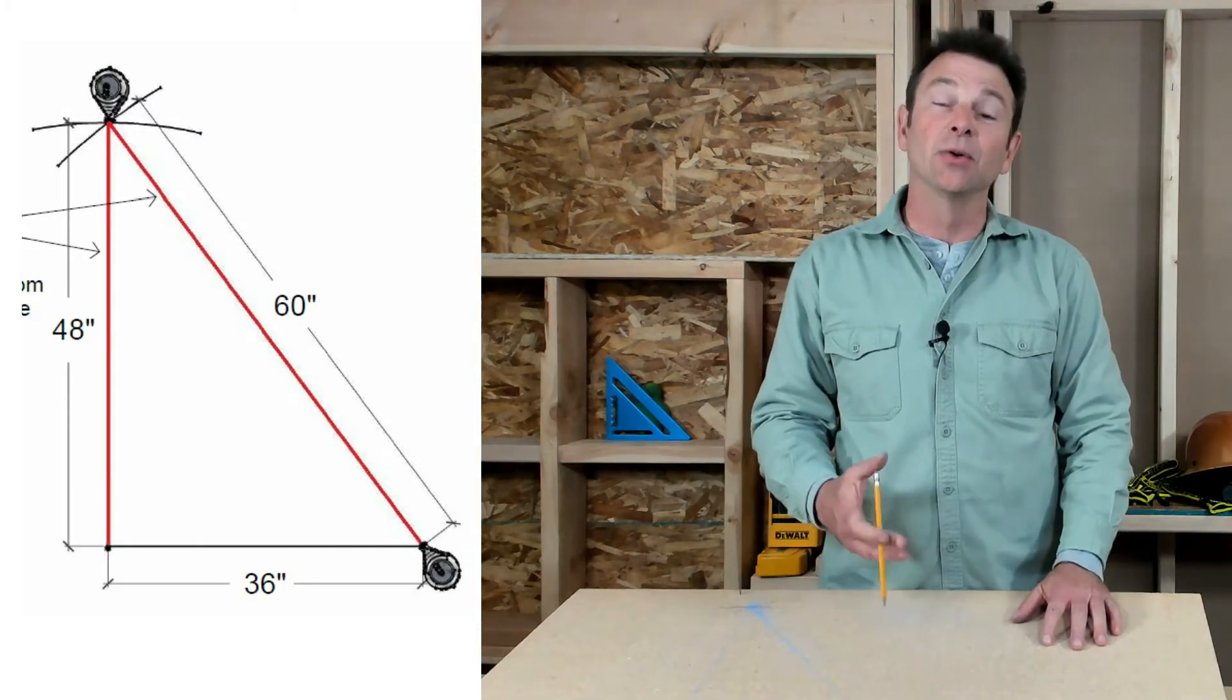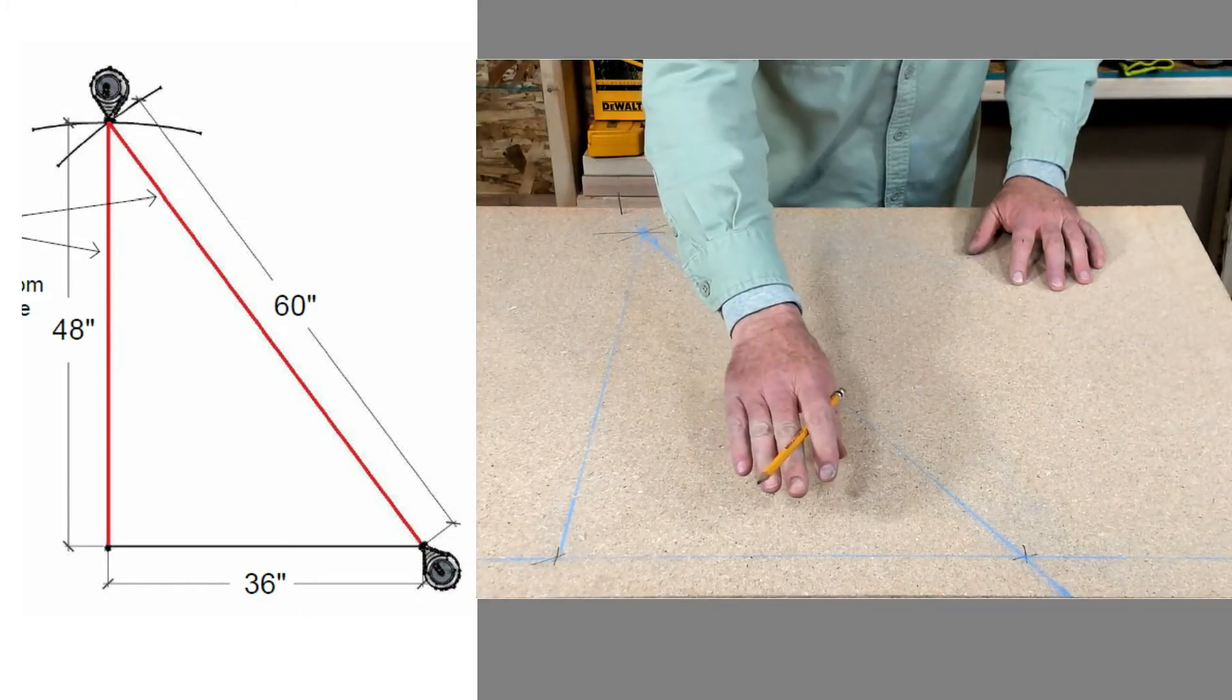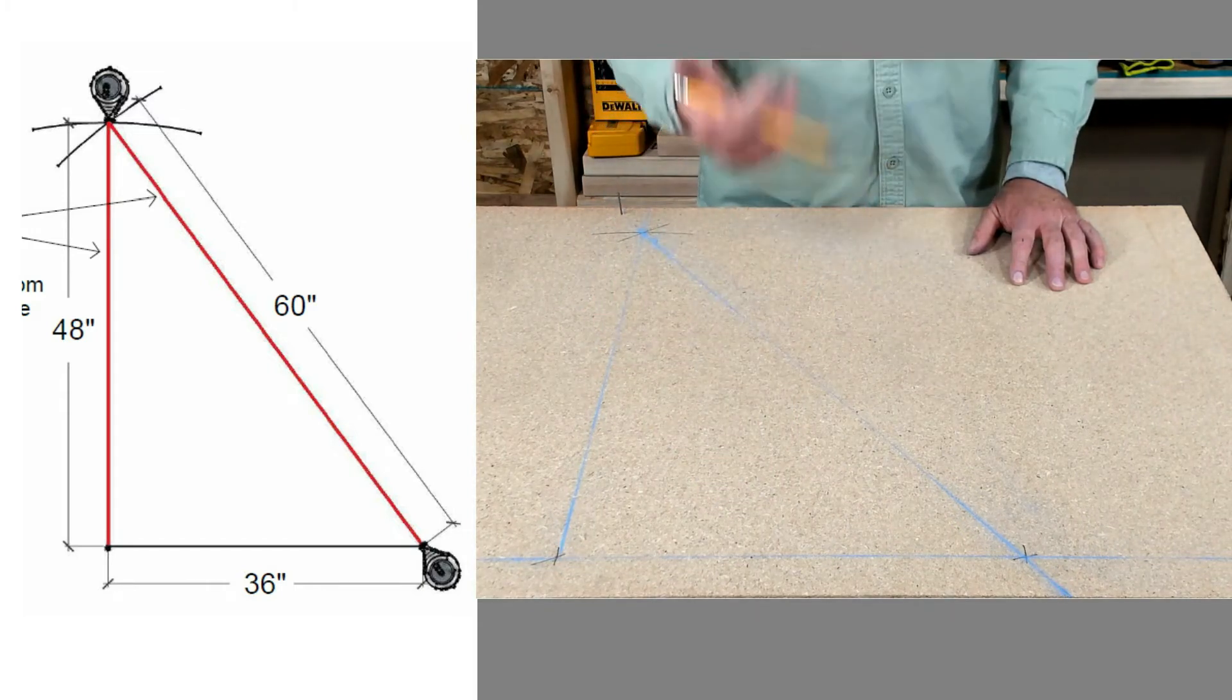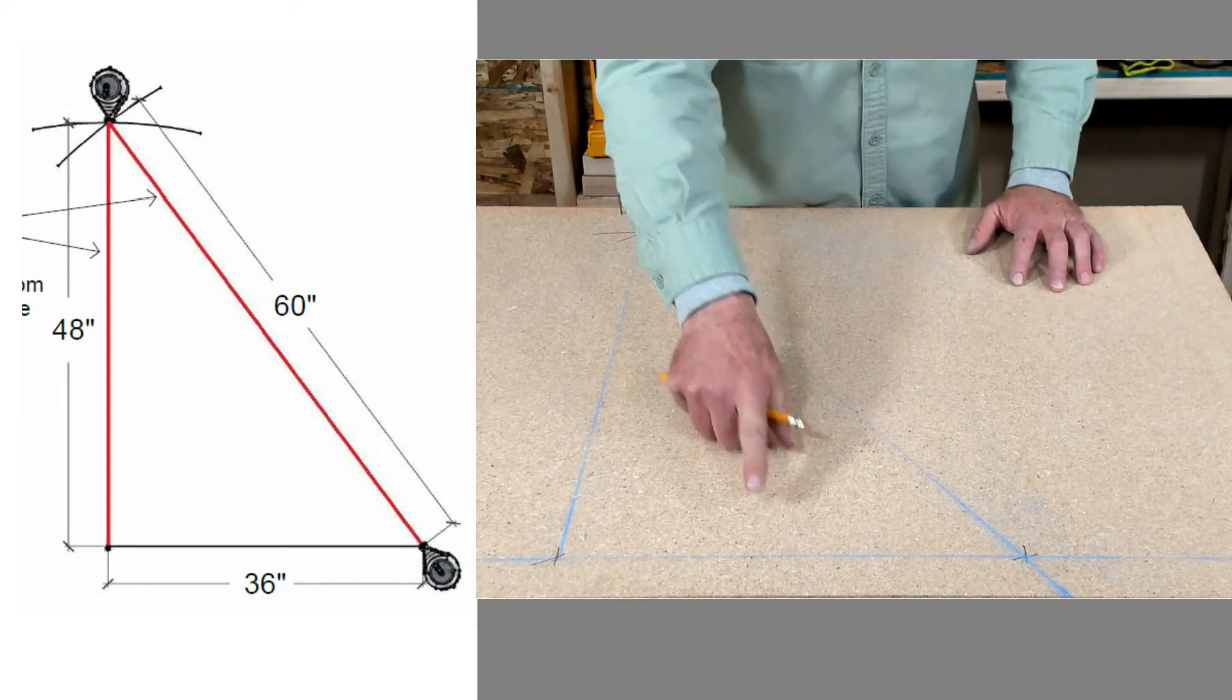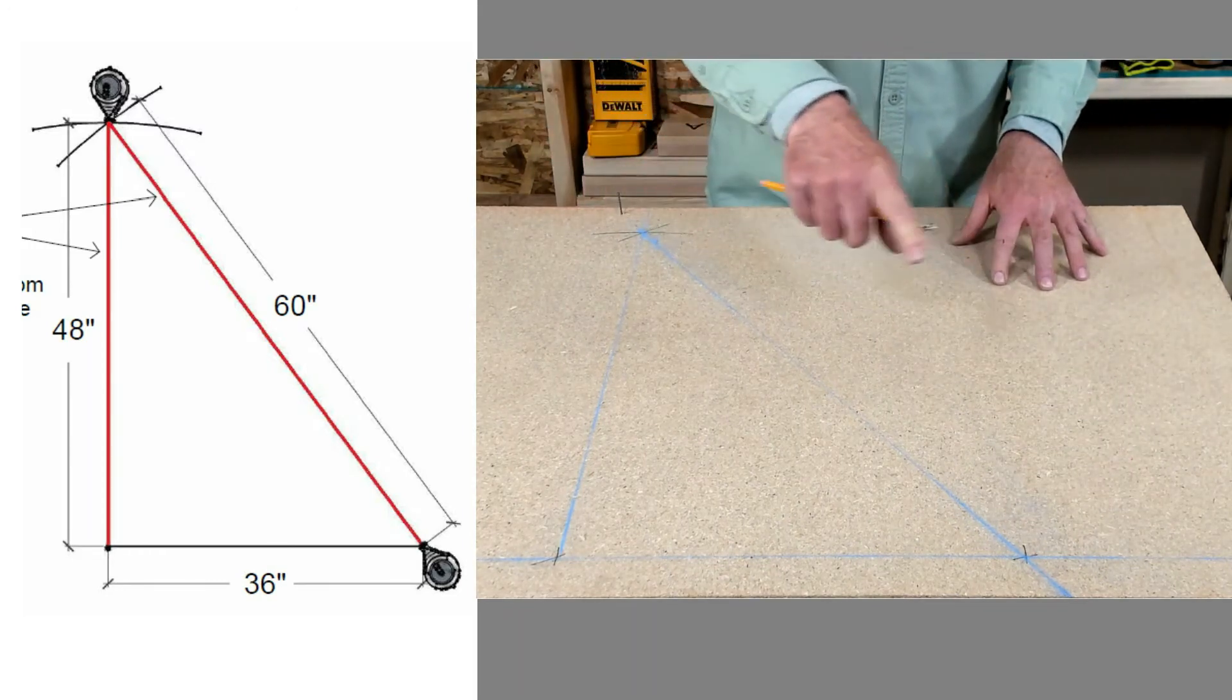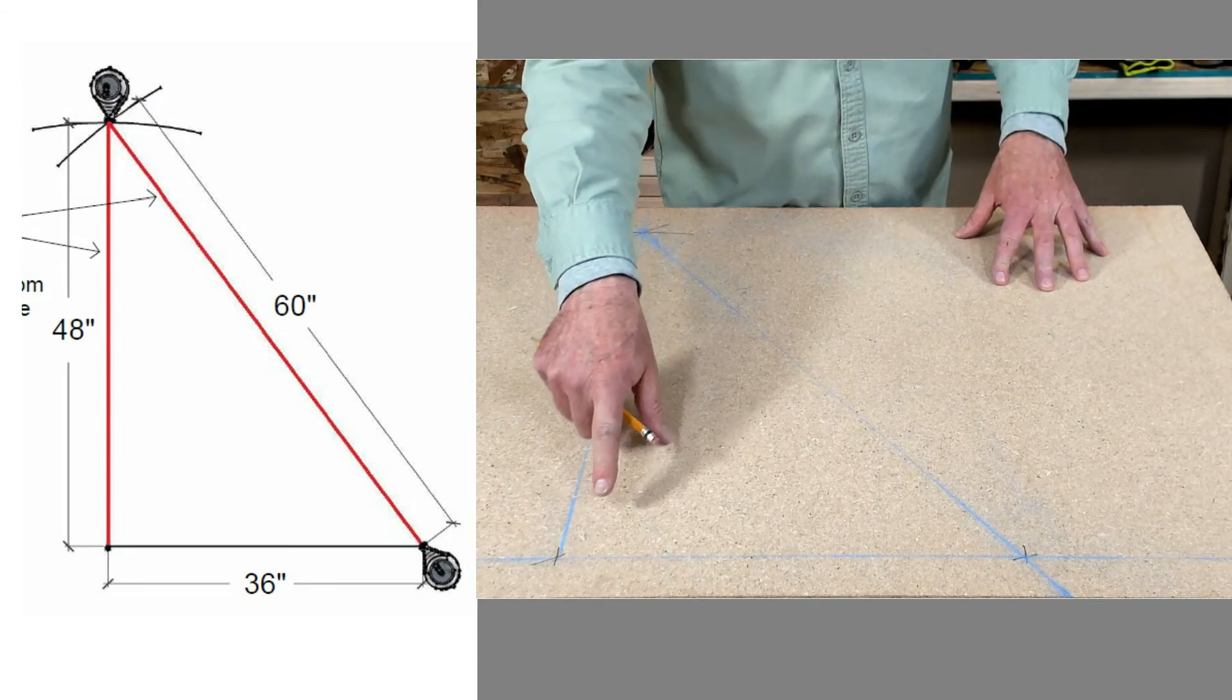So just to review, a 3-4-5 triangle has a proportion between the short leg, the longer leg, and the hypotenuse of 3, 4, and 5. In my case, I multiplied each one of those numbers by 5. So my short leg was 15, my longer leg was 20, and my hypotenuse was 25. If we can achieve those three lengths, we can guarantee that we have a 90 degree angle in this corner.